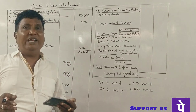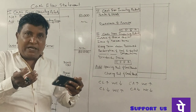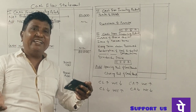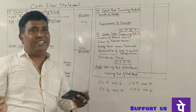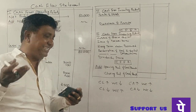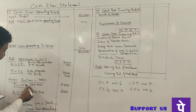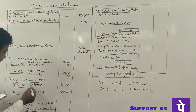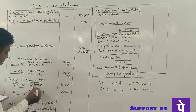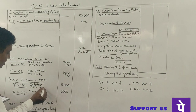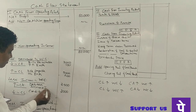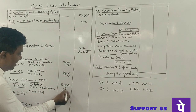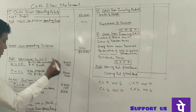Accrued income: this is a current asset. Accrued income increased by 750 rupees, then 150 rupees increase. An increase in current asset leads to an increase in working capital. Increase in working capital means deduction from cash from operations. Accrued income increased by 150 rupees.